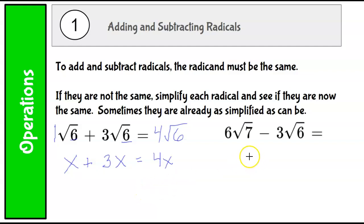Now on this one, they do not have the same radicand. One is 7 and one is 6, and neither one of those numbers can be simplified. Neither one of those radicals can be simplified. And so this is already simplified because you can't actually add or subtract them.